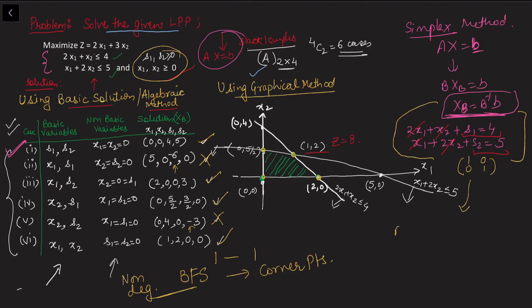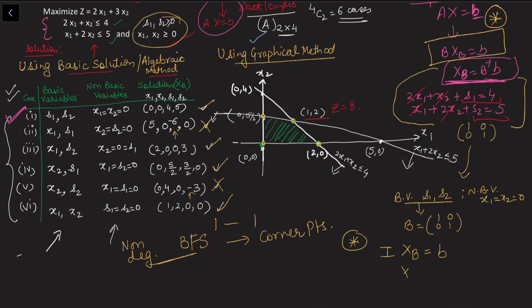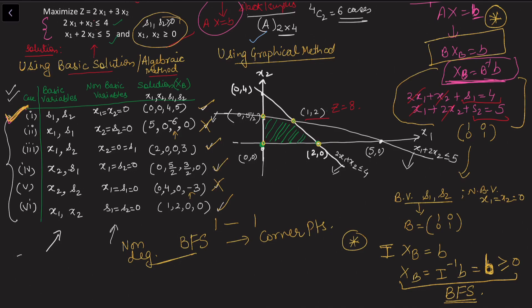For this choice, if I select s1 and s2 as basic variables and the original variables as non-basic, the basis matrix B is the identity matrix. So x_B = B⁻¹·b = I⁻¹·b = b, and since b is already non-negative — a condition required when the LPP is in standard form — this gives us the initial basic feasible solution. This is the same starting solution found by the algebraic method.